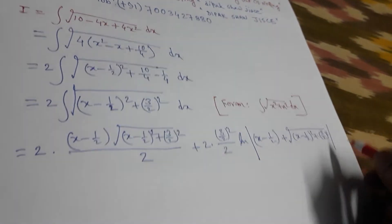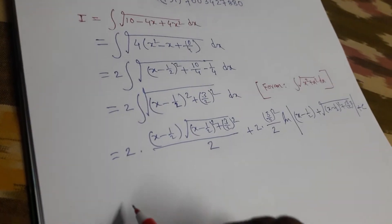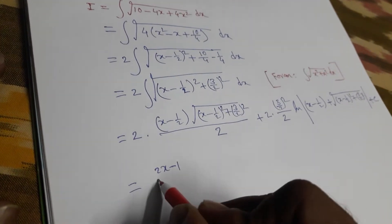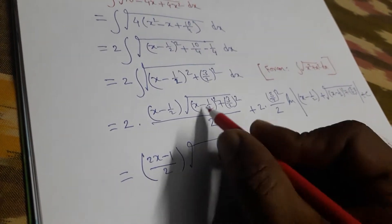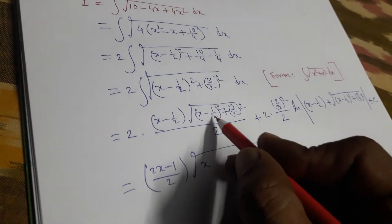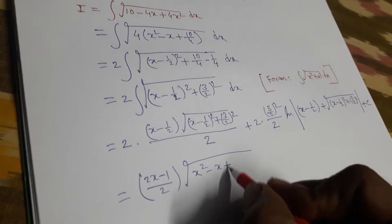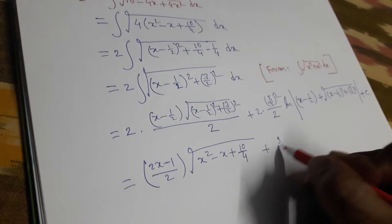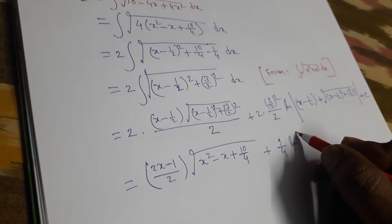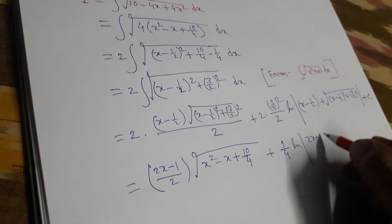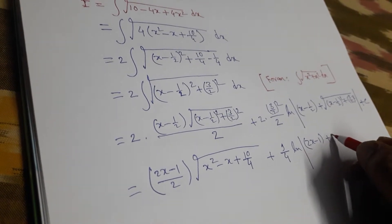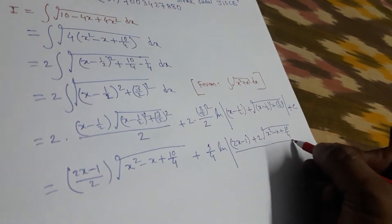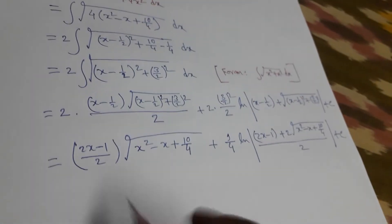These two terms cancel, giving (2x - 1)/2 into √(x² - x + 10/4), plus (9/4) log of (2x - 1) + 2√(x² - x + 10/4), divided by 2, plus the constant of integration c.